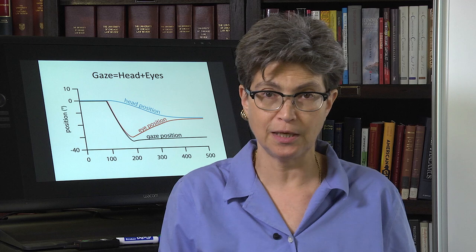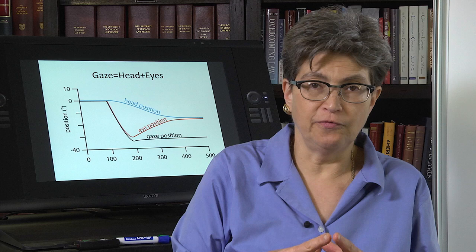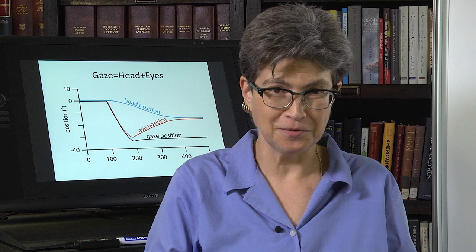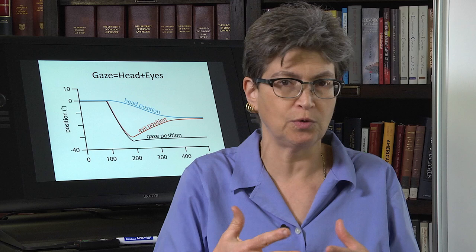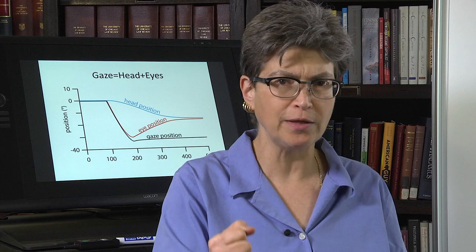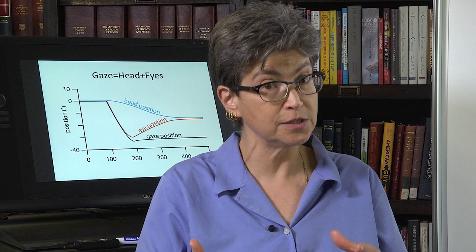On a more lofty level, eye movements and gaze tell us a lot about a person. We talk about a shifty-eyed person as though they're not trustworthy because they don't keep their eyes in one place. Or we say that person has a steady gaze, looked me right in the eye. So we are inferring a lot of very lofty qualities from our description of how people move their eyes.